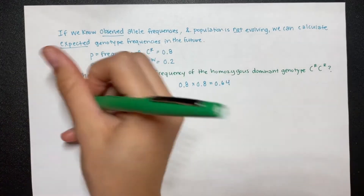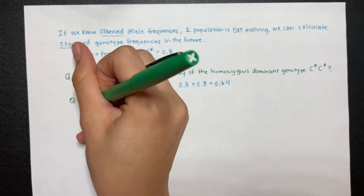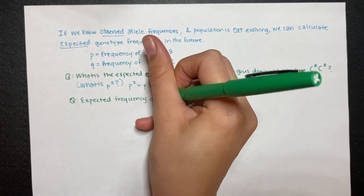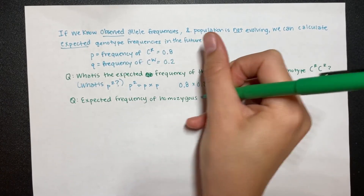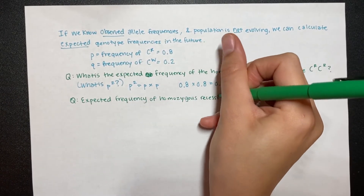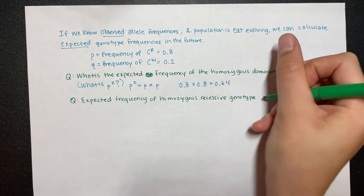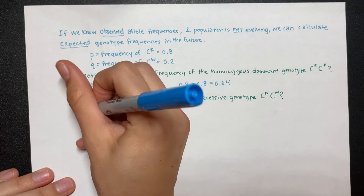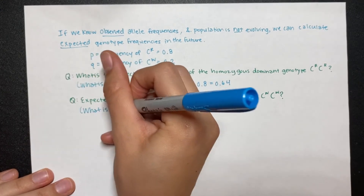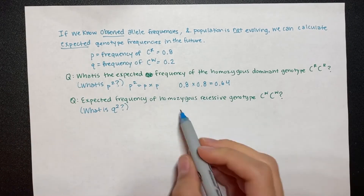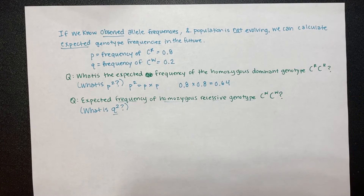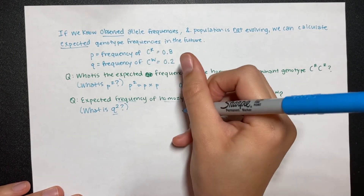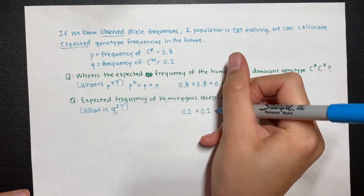What is the expected frequency of the homozygous recessive genotype CW-CW, or q²? q times q: 0.2 × 0.2 = 0.04.